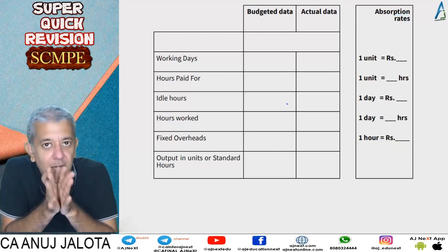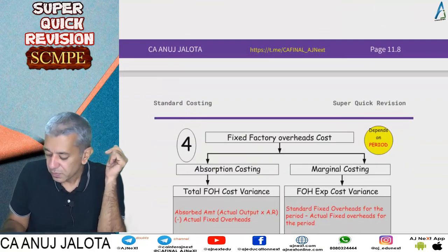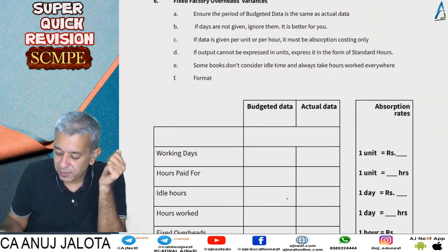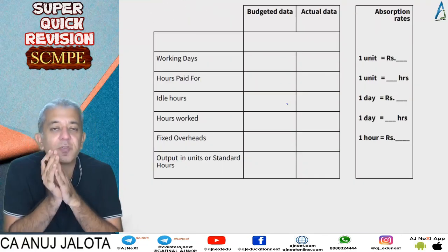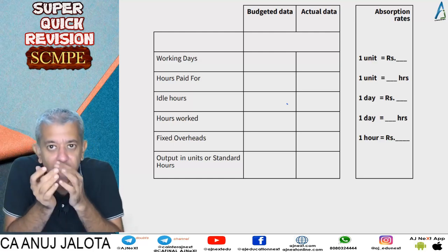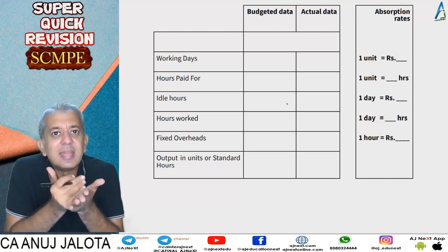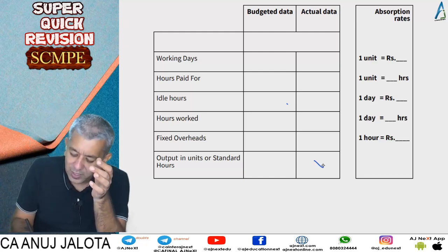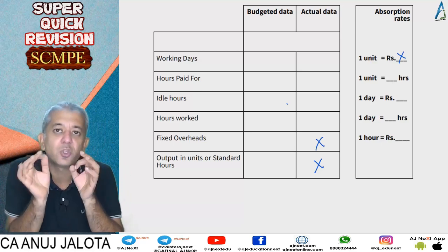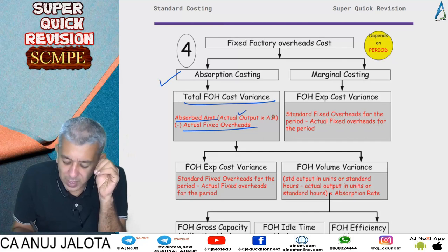Now we calculate fixed overhead variances under absorption costing. The first variance is under or over absorption. It is absorbed amount less actual amount. Absorbed amount is computed as actual output multiplied by absorption rate. So: absorbed amount = actual output × absorption rate, minus actual overhead incurred. This is your fixed overheads cost variance.